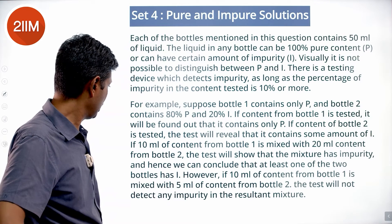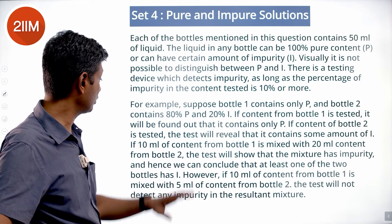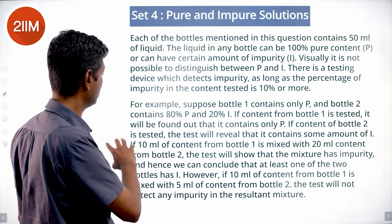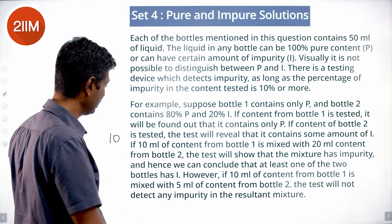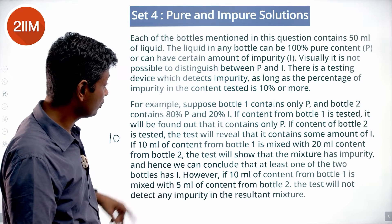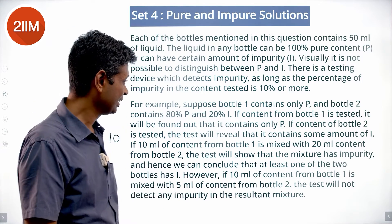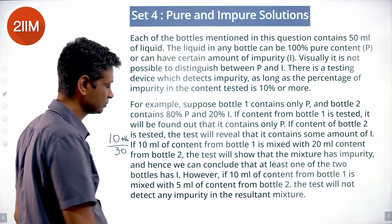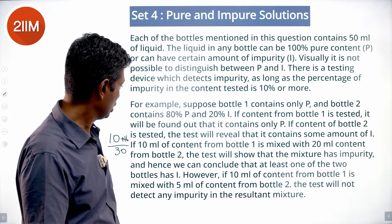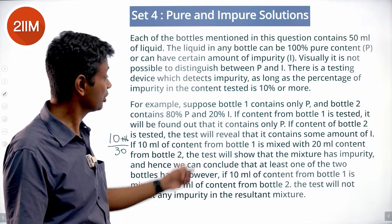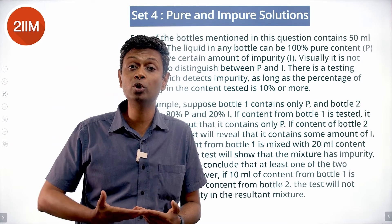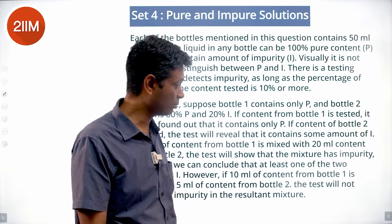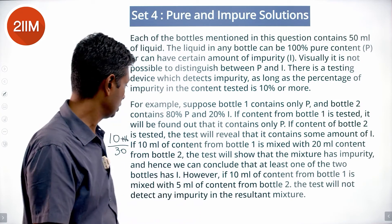If 10ml of content from bottle 1 is mixed with 20ml of content from bottle 2: 10ml is pure, and 20ml from bottle 2 will have 16ml pure and 4ml impure. So the impurity content is 4/30, which is more than 10%. The test will show the mixture has impurity — 30ml total, 4ml impurity, more than 10%, so impurity is detected.